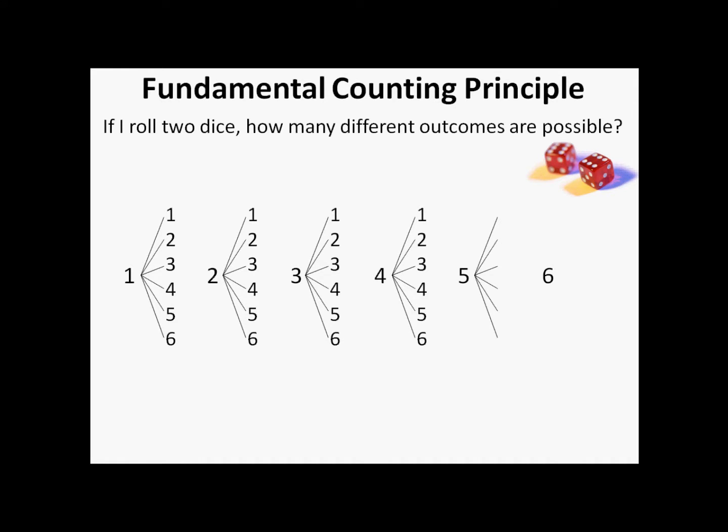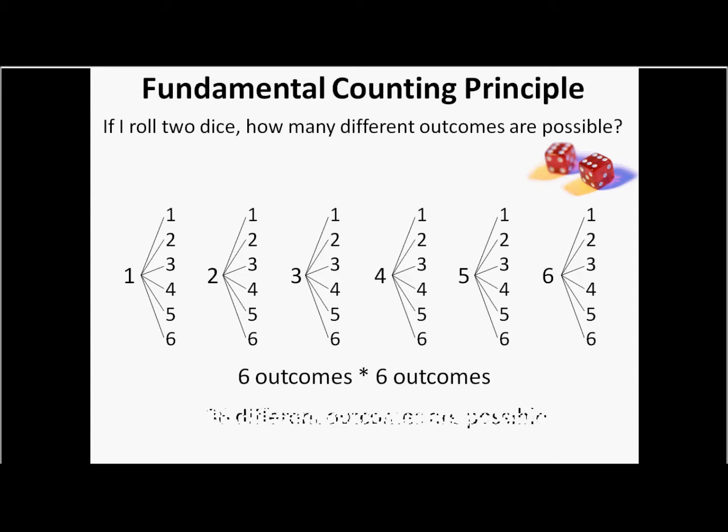Four, same deal. Five, same deal. Six, same deal. Six outcomes times six outcomes. Isn't it a lot easier to do it this way, just multiplying your number of outcomes for each event that happens? You've got your first die, you've got your second die, you multiply. Thirty-six different outcomes.